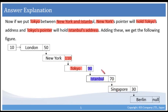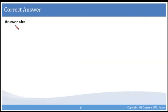This means that we have to set New York's pointer to 110 and Tokyo's pointer to 90. As we said on the previous slide, the answer is B: New York's pointer to 110 and Tokyo's pointer to 90.